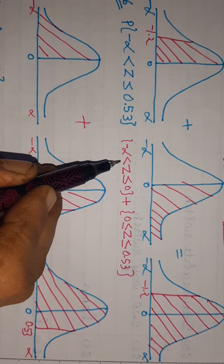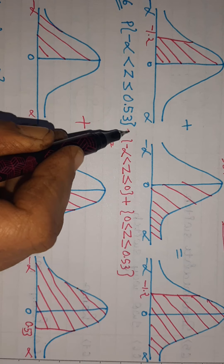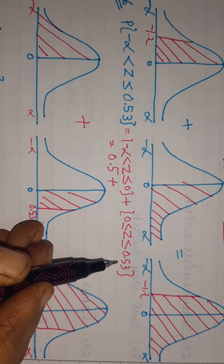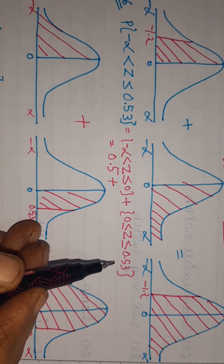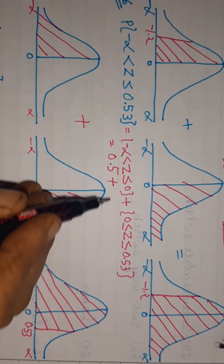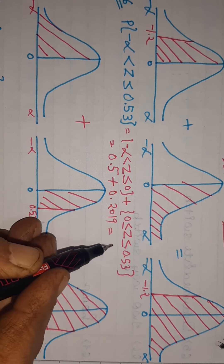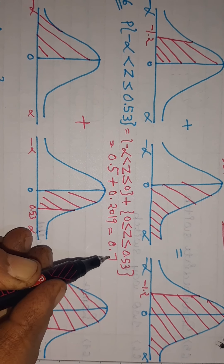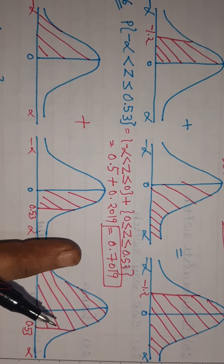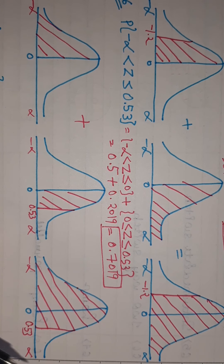Now we look in the Z table. The area from minus infinity to 0 is 0.5. For 0 to 0.53, we look up 0.53 in the table, which gives 0.2019. So the total area is 0.5 + 0.2019 = 0.7019.